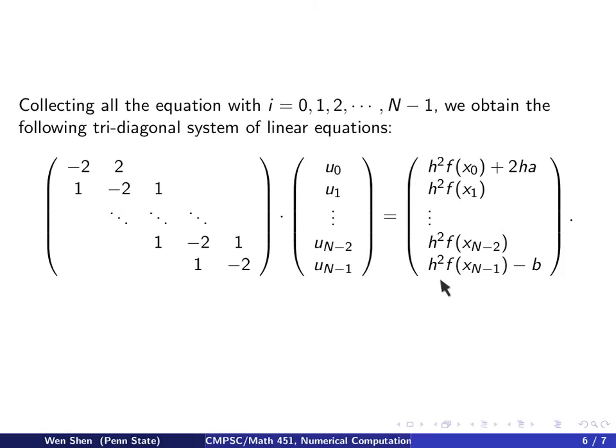In the last equation, we have -b which comes from the Dirichlet boundary condition. This one is coming from the Neumann boundary condition, and this is from the Dirichlet boundary condition on the right.